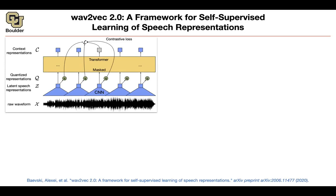The answer is yes — you can use transformers with a pre-training loss function, learning from unlabeled speech data. It's like a child first learning to speak and listen before learning to write and read. We want to learn representations by listening only. The catch is that transformers are expensive — cost is O(n²) in sequence length. We get around this by first downsampling with convolutions, going from x to z.